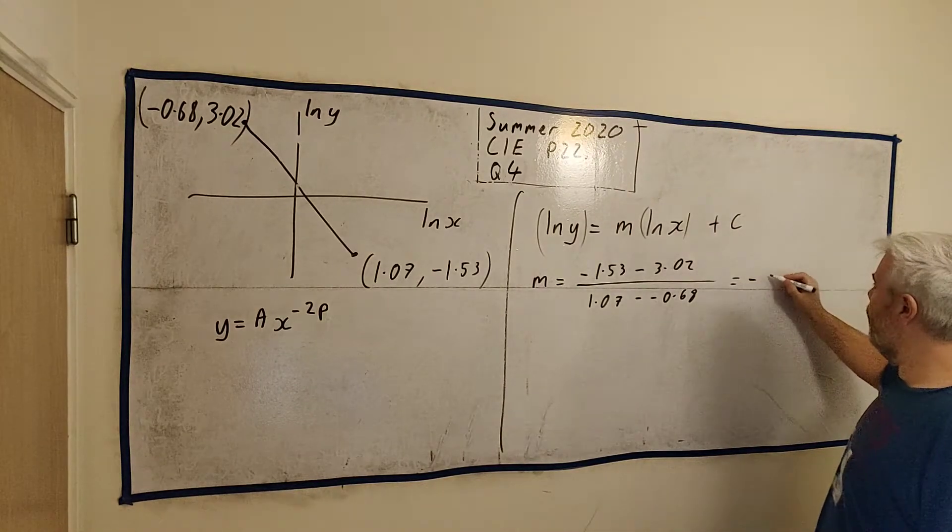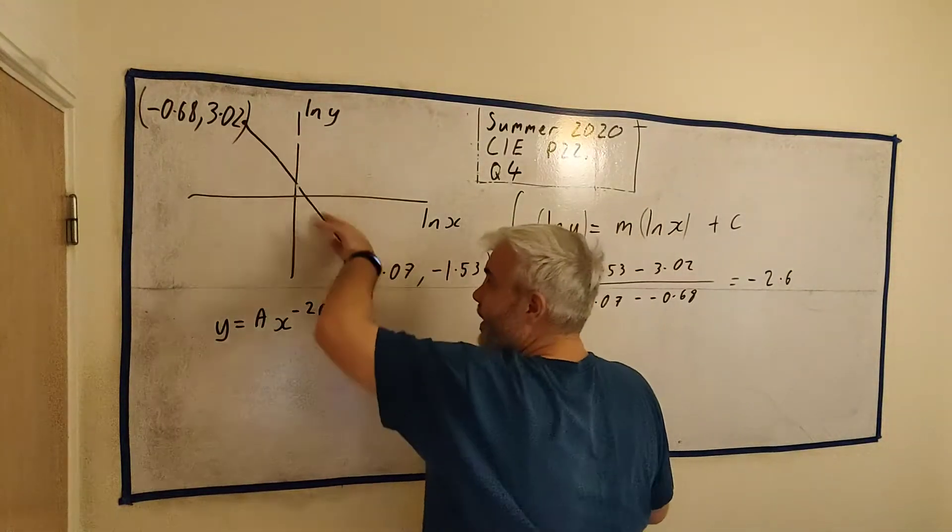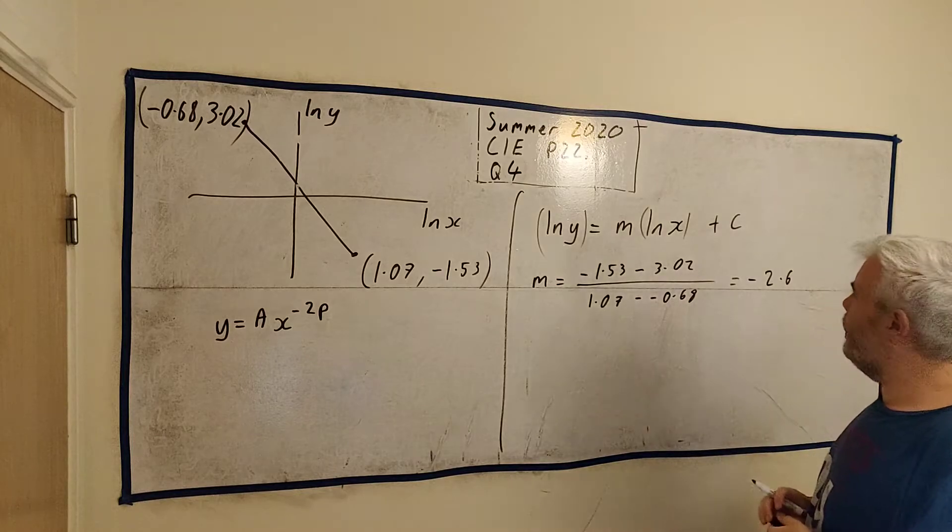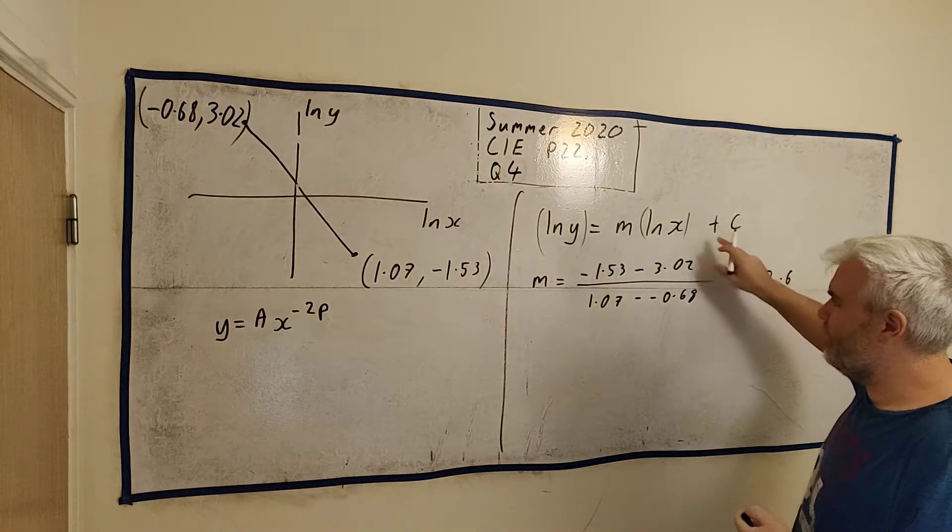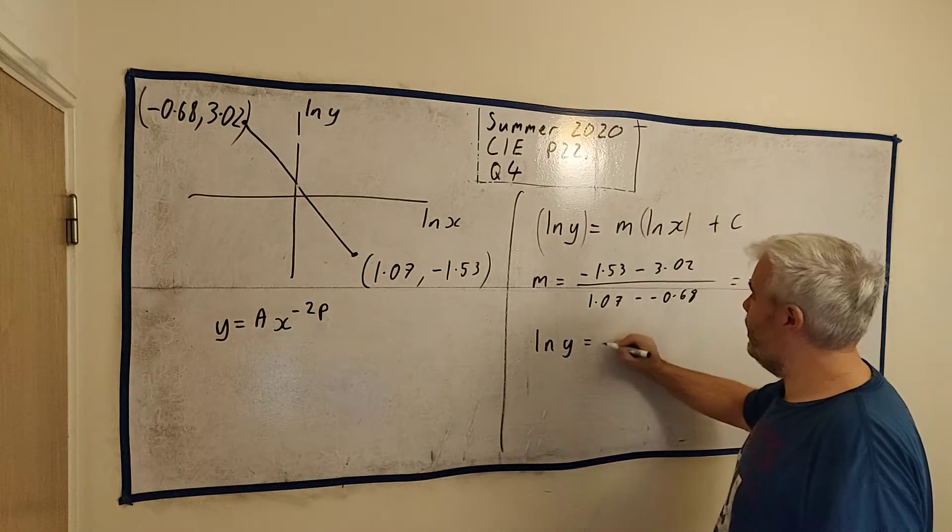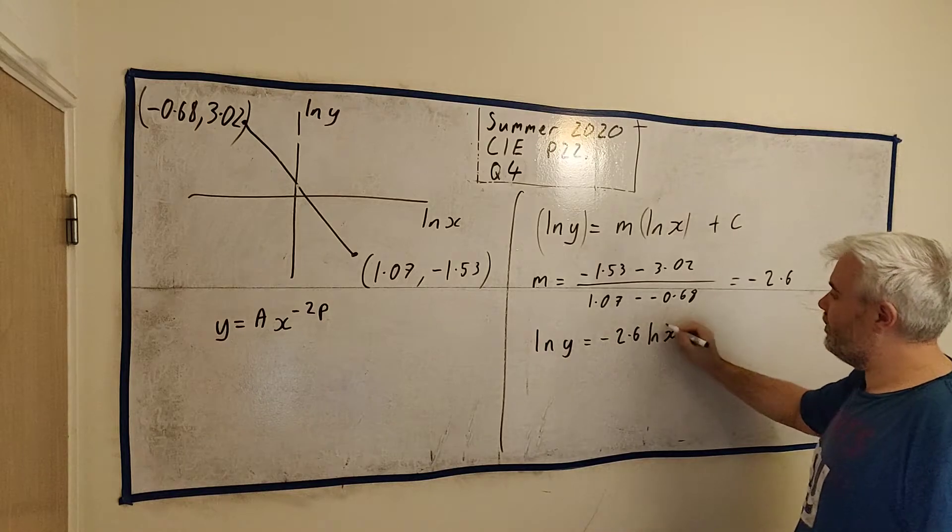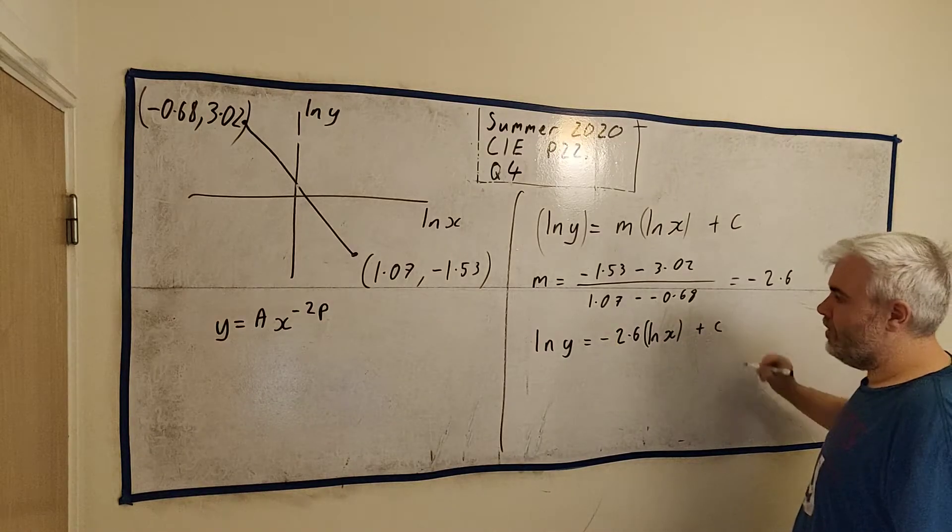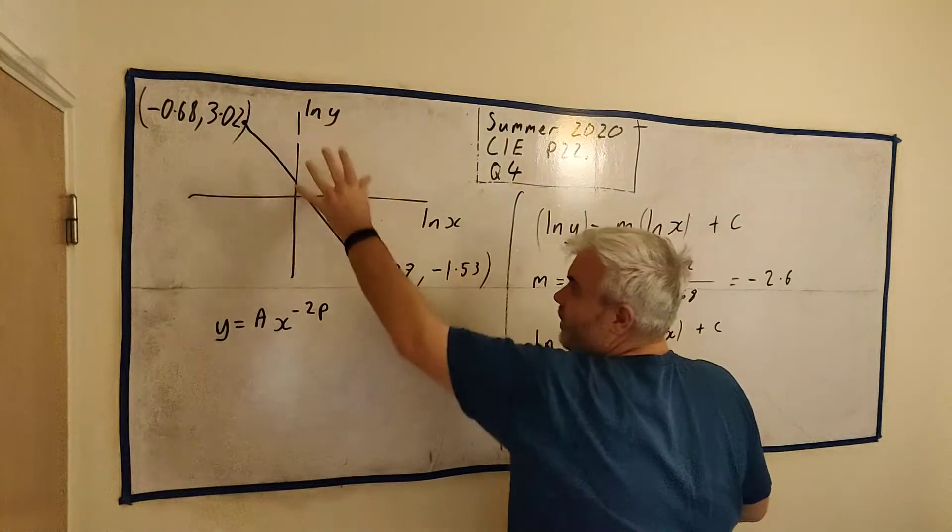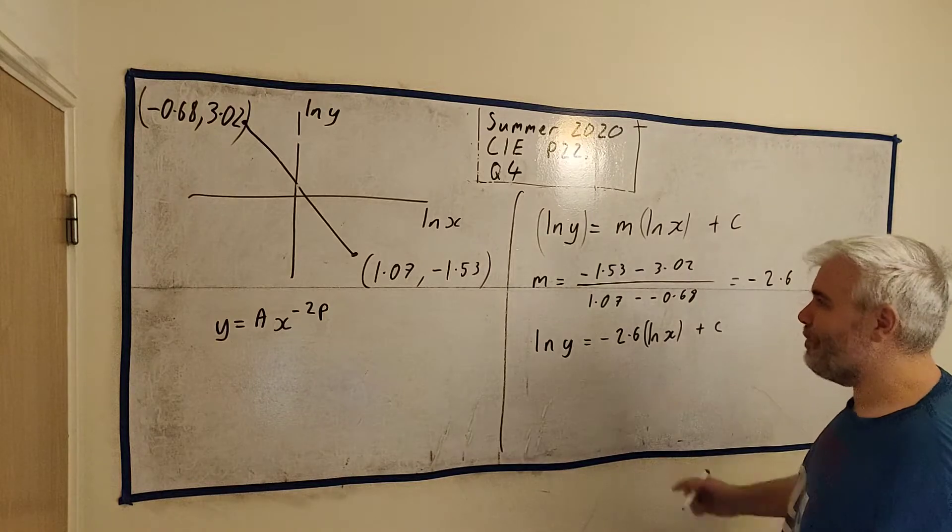And if we put that into a calculator, we get, or at least I got earlier, minus 2.6. That makes sense. It's going down. So we better make sure we get a minus. Right. So then we need to find c. The best way to probably find c is just to write out this equation again. Natural log of y is equal to minus 2.6 natural log of x plus c.